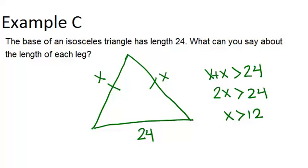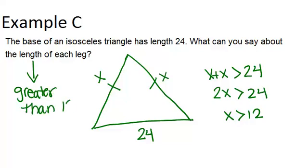So we know that the length of each leg has to be greater than 12 in order to satisfy the triangle inequality theorem. Note that the legs couldn't each be exactly 12, because then it actually wouldn't make a triangle either — the lengths must be strictly greater than 12.